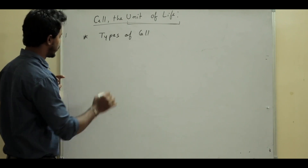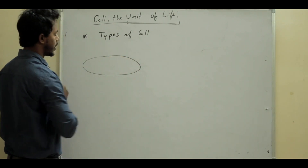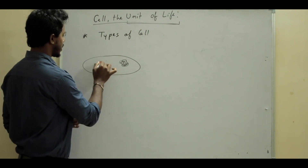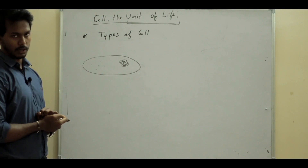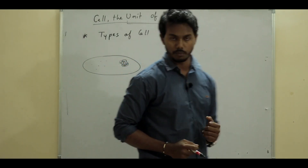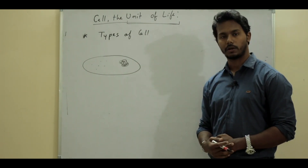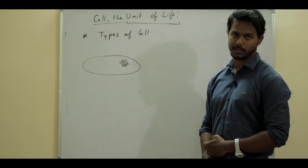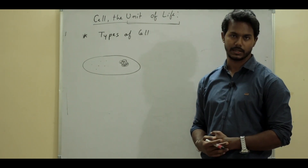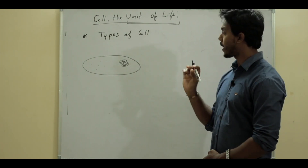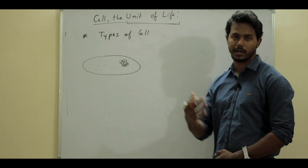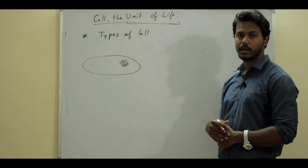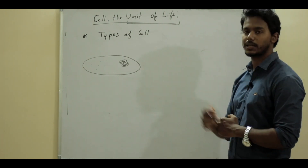A cell can be round or elongated in structure - it depends on the kind of cell. Animals are called multicellular organisms, meaning they are made up of more than one cell. Some organisms, like bacteria, have only a single cell - they are unicellular. Our organisms like humans have millions and trillions of cells.